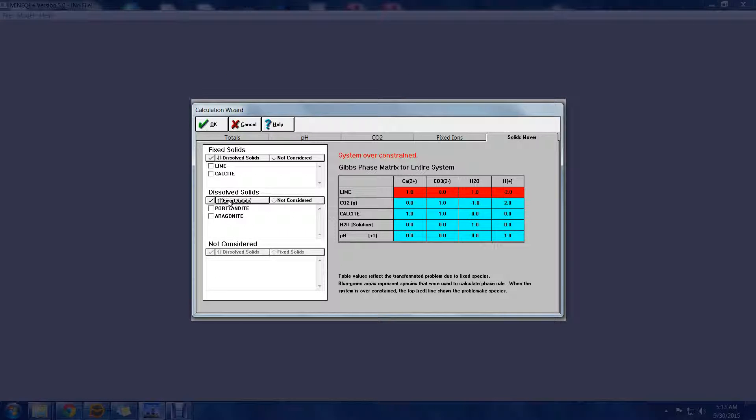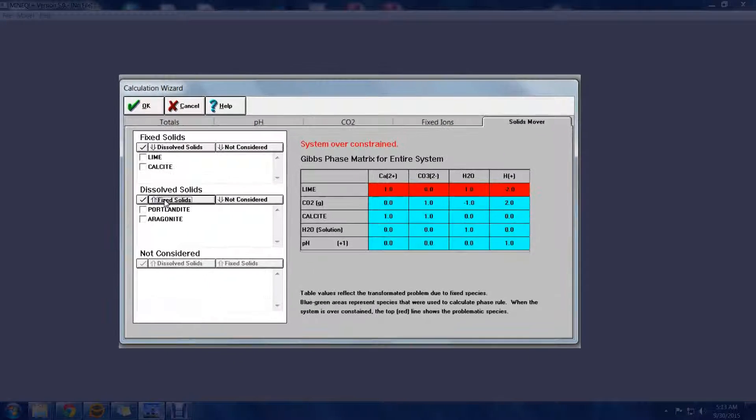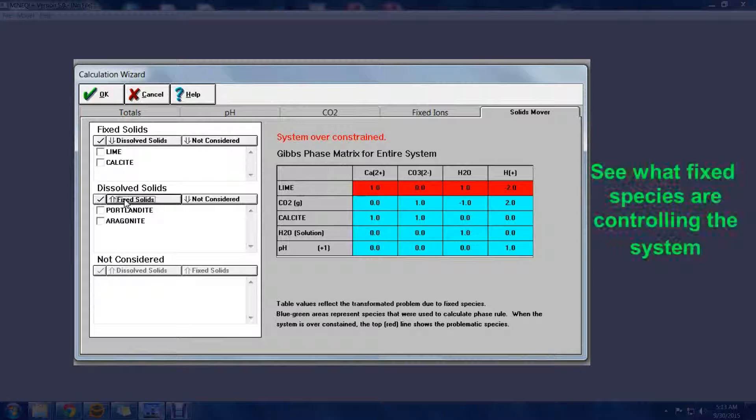Fortunately, you don't need to keep ongoing tabs on what phases are controlling what components. Using the Gibbs phase matrix, you can see how your system is being controlled, and it will give you a warning when the system gets over-constrained.